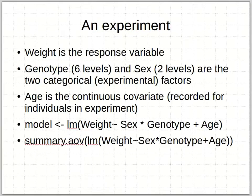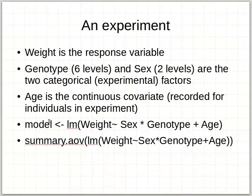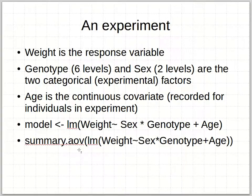Let me give you an example in R. Here's a dataset where weight is the response variable. There were six genotypes for each of two sexes — male and female — those are the categorical genotype experimental factors, and sex is also categorical. Age, on the other hand, was a continuous covariate recorded for the different individuals during the experiment. We can use simple statements: the model is a linear model of weight as a function of sex times genotype — because we have a factorial design — plus our covariate age.